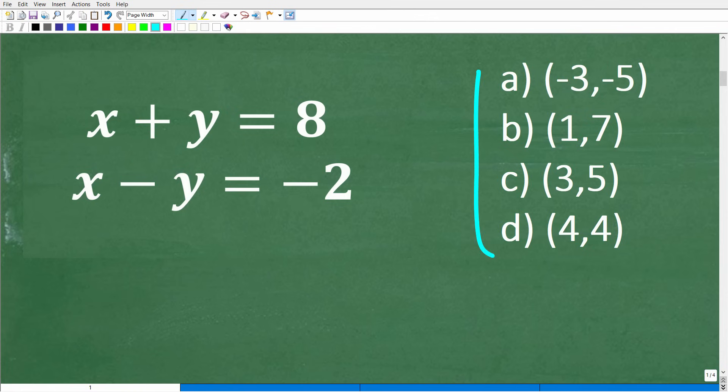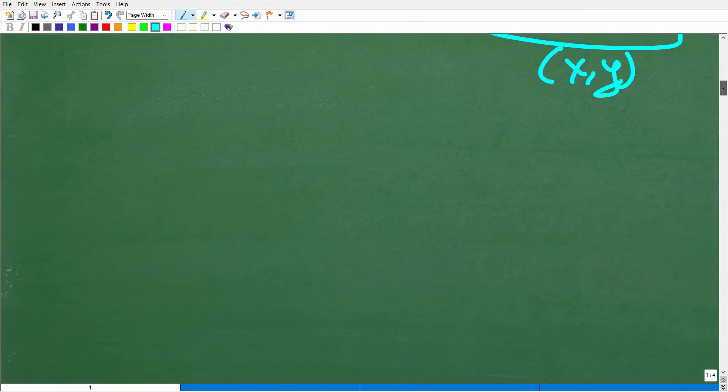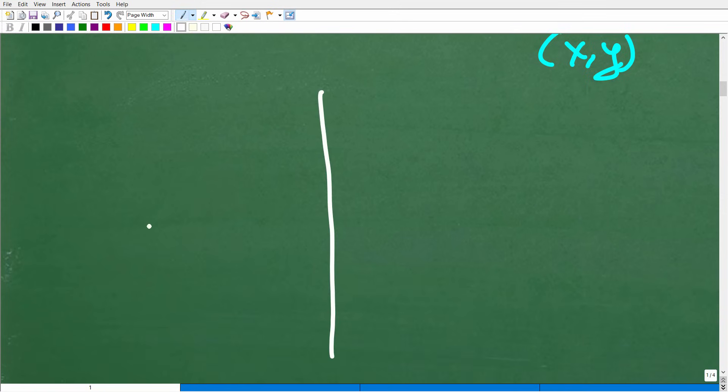now remember, these things right here represent x, y points. So let's go ahead and talk about these real quick. Remember, this is a line and this is a line. In other words, we can graph this line and graph this line. And let's talk real quick about what the solution to a linear system represents. So I'm going to kind of sketch out real quick a basic x, y graph,